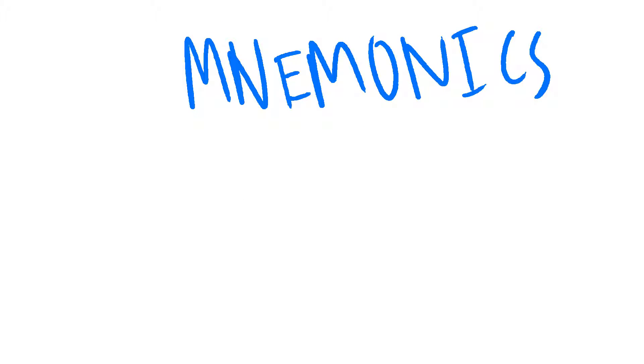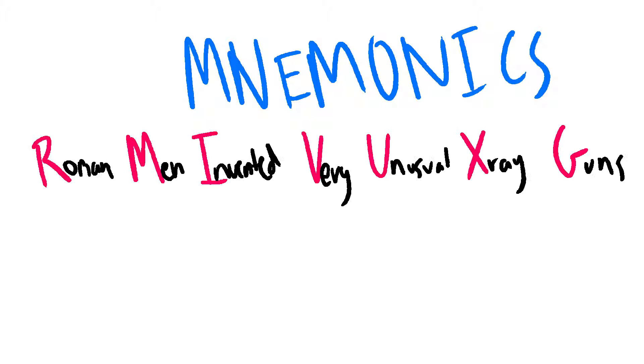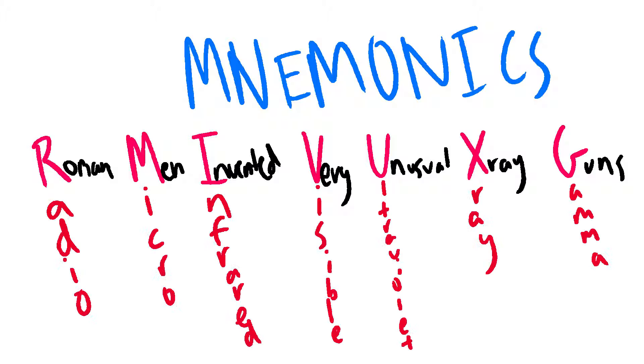This is why mnemonic devices are so powerful. For example, Roman men invented very unusual x-ray guns is a perfect way to memorize the electromagnetic spectrum. Radio waves, microwaves, infrared, visible light, ultraviolet rays, x-ray, and gamma rays.